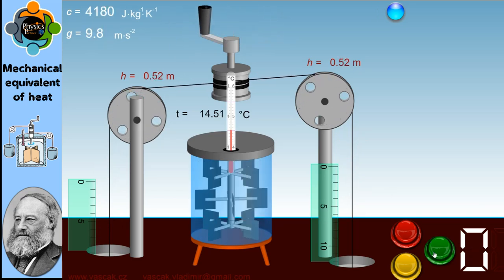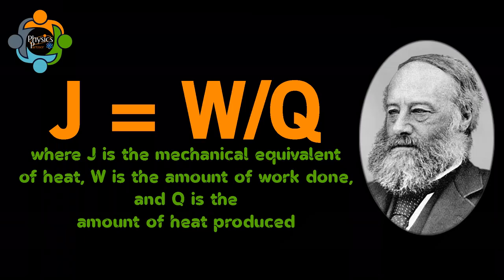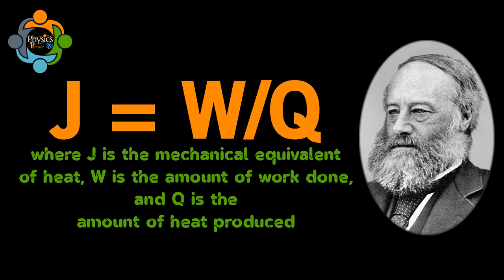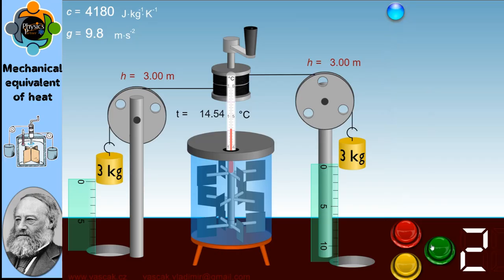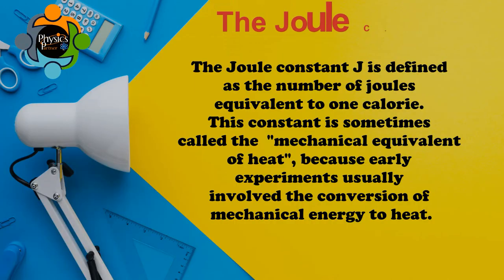He expressed the concept mathematically using the formula J = W/Q, where J is the mechanical equivalent of heat, W is the amount of work done, and Q is the amount of heat produced. The energy and work units are joules. Interestingly, the proportionality constant obtained by Joule, now known as Joule's constant, is a fundamental physical constant used in thermodynamics.